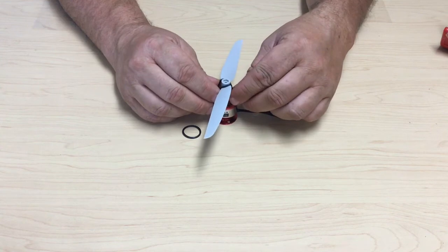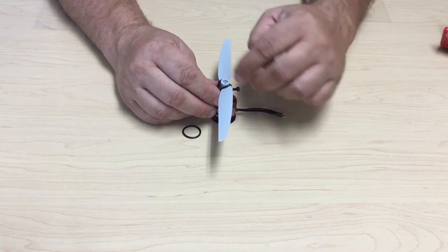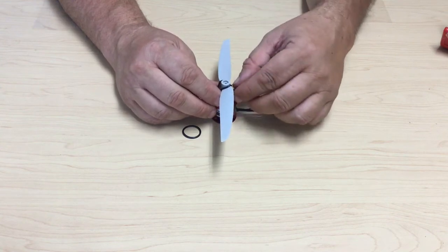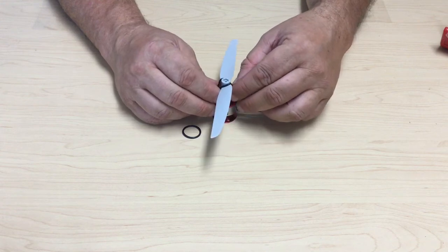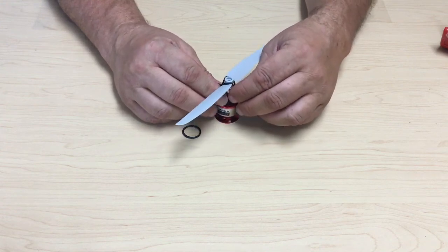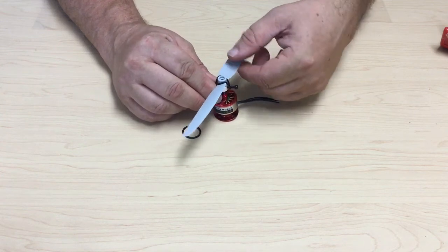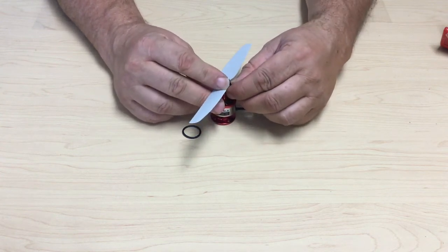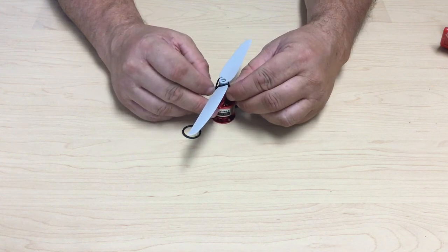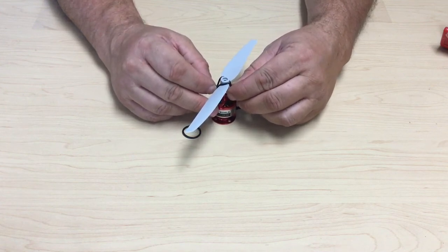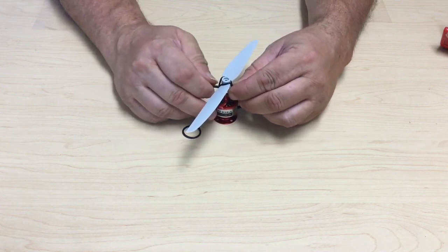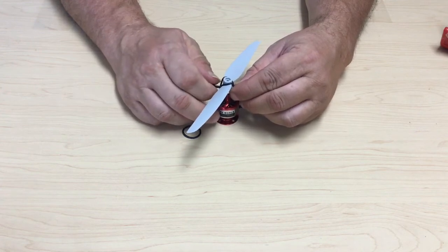In order for the prop saver to work perfectly, you do not want the prop to actually be on the shaft itself. You only want it on the prop saver. You want the prop saver secured to the shaft, but you want to have a little bit of leeway for the propeller itself. And I'll show you why in a moment. So we're going to tighten up the screws on the prop saver around the shaft here.